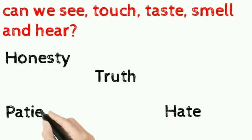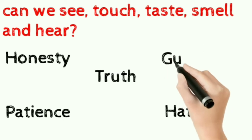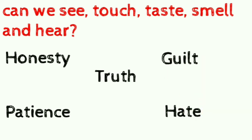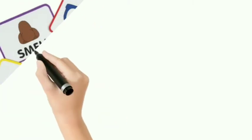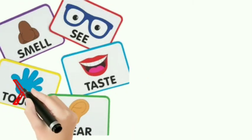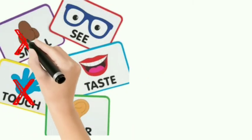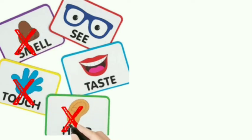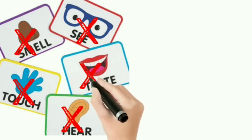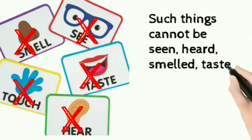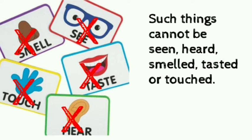Students, can we see, touch, taste, smell, and hear honesty, patience, truth, guilt, and hate? No, we can't. These cannot be detected or experienced through our five senses. Something that is abstract exists only in the mind and is called an abstract noun. Such things cannot be seen, heard, smelled, tasted, or touched.